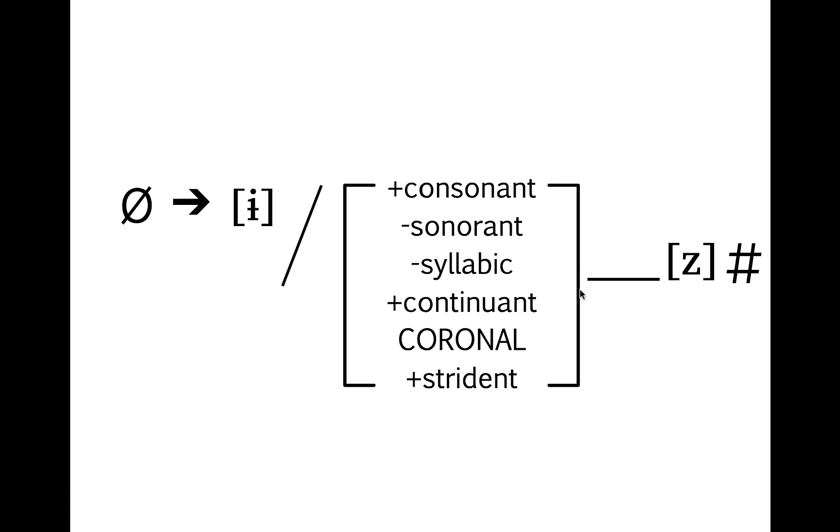So the idea we're working with here is that every single fluent speaker of English, every time they speak the plural form of a word that ends with [s], [z], [ʃ], [ʒ], [tʃ], or [dʒ], their mental grammar automatically applies this rule. And it happens so regularly and so rapidly that most of us aren't even aware of it.